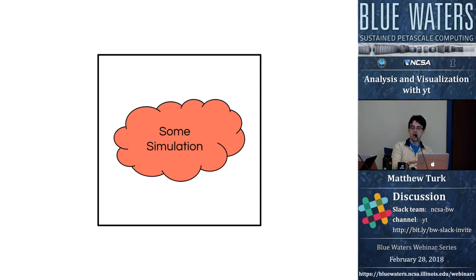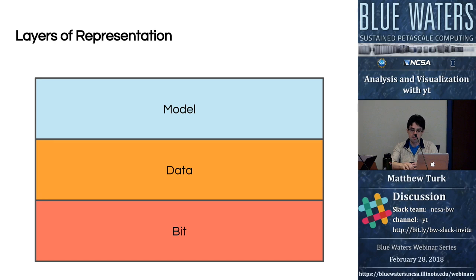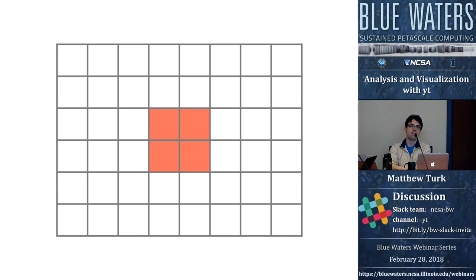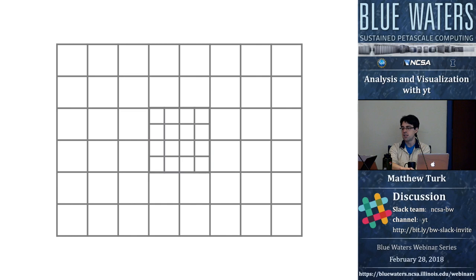Let's think about some simulation — maybe run on Blue Waters, maybe a simulation of whole-earth seismology or galaxy formation or a nuclear reactor. Sometimes simulations are organized in a rectilinear structure — some sort of Cartesian mesh where we're solving for fluid flow across the boundaries of cells. In an adaptive mesh refinement simulation, we identify interesting areas and add higher levels of refinement there.